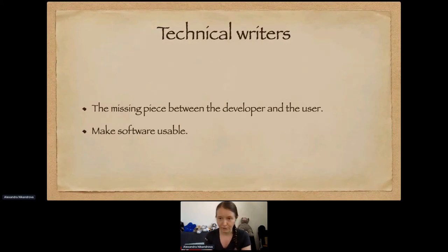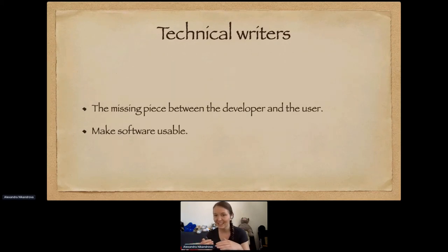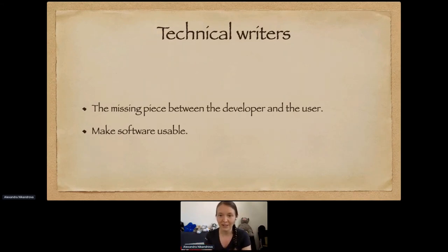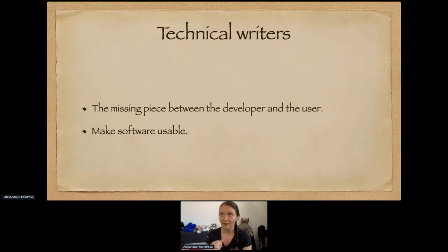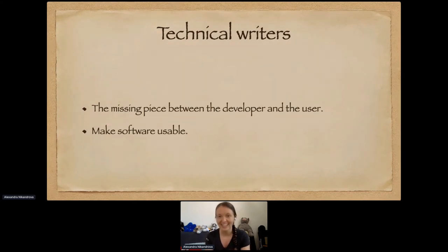That's why we have technical writers. Technical writers are basically the missing piece between a developer and a user, and they make software usable. As a technical writer, you don't have to understand the code. But unlike most users who simply find software somewhere to solve their problems, you have access to developers. You can ask them for better explanation, and developers, in my experience, usually help — because they understand it's almost impossible for a user to achieve results using their software. Your help as a technical writer is really, really important.